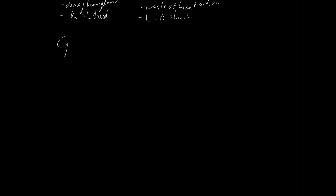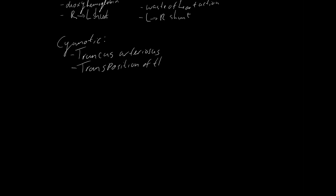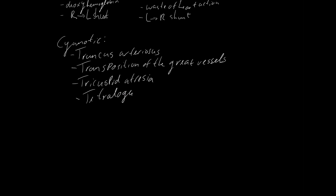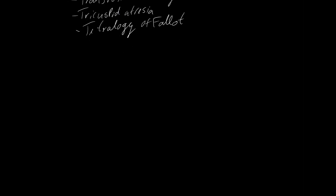Now we'll cover examples of cyanotic heart diseases. All of the names start with 'T': truncus arteriosus, transposition of the great vessels, tricuspid atresia — meaning the tricuspid valve is functionally non-existent — and tetralogy of Fallot, which is a fascinating pathology and a common exam question.